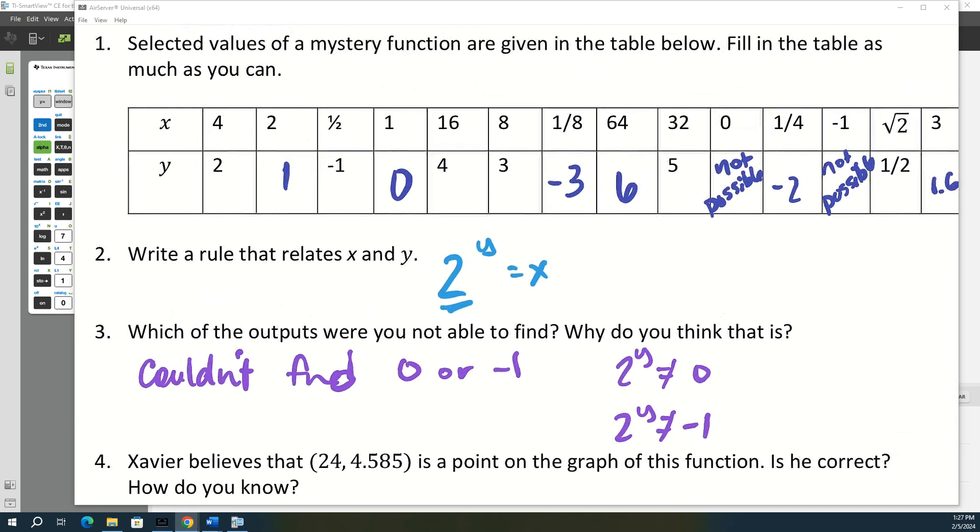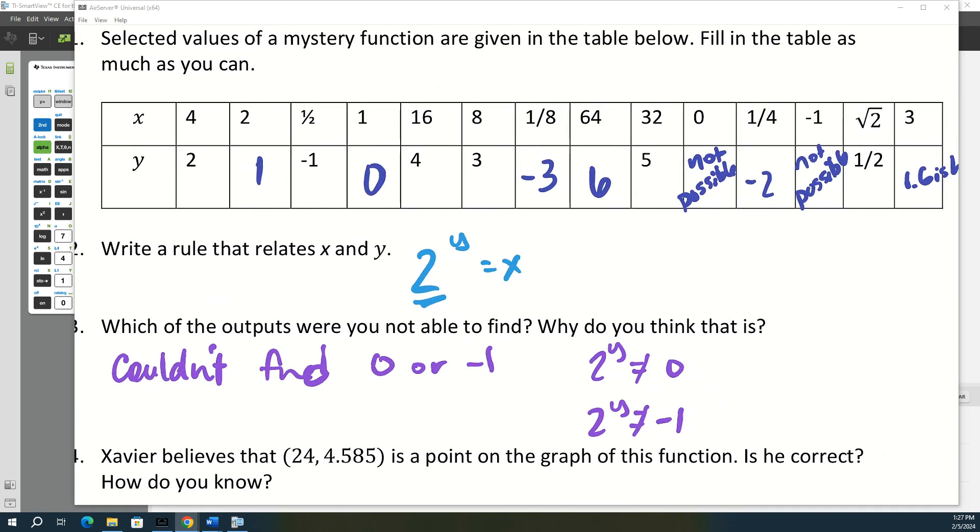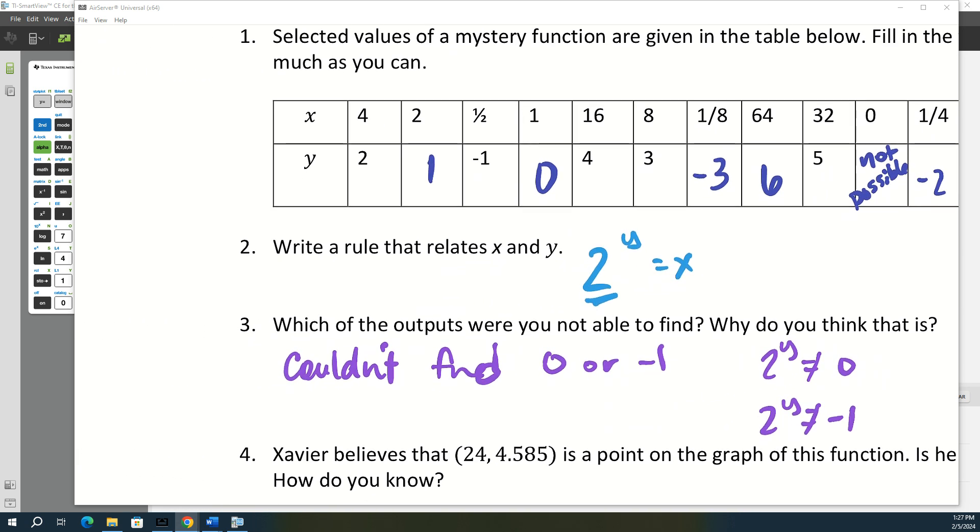Okay, so we kind of figured out the rule. Let's do y equals x, and then there were certain times that we couldn't get that output or get that input. Do you guys know what kind of function this would be? It's on the board. Yeah, it's gonna be a logarithmic function. So 2 to the y equals x is the same as y equals log base 2 of x.